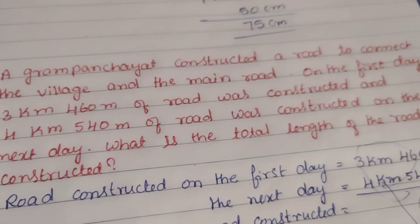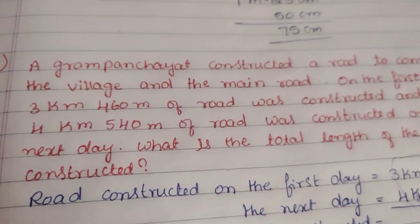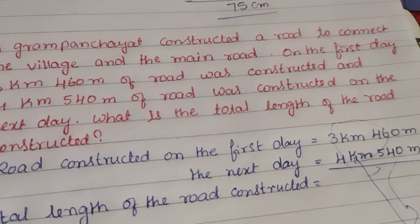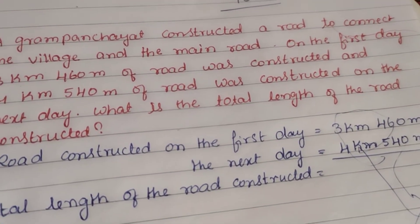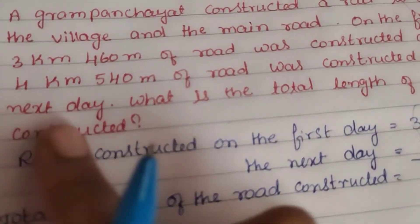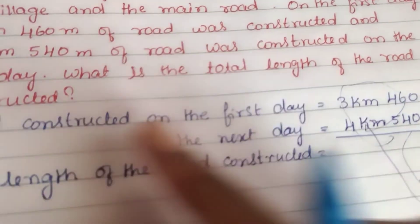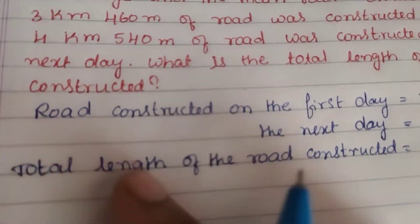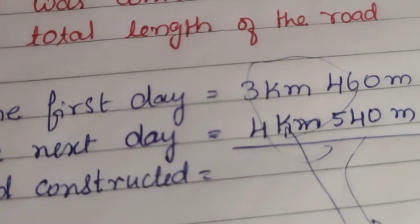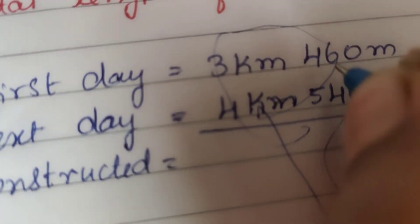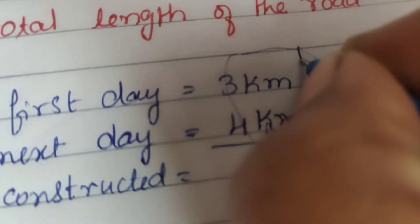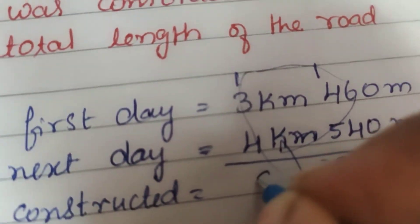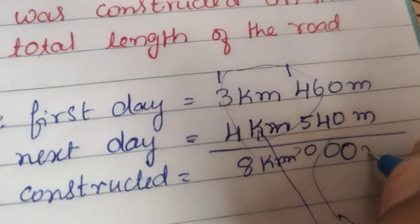Eighth question: A gram panchayat constructed a road to connect the village and the main road. On the first day, 3 kilometres 460 metres of road was constructed, and 4 kilometres 540 metres was constructed on the next day. What is the total length? Road on first day: 3 km 460 m. Road on next day: 4 km 540 m. Adding: 0 plus 0 is 0; 6 plus 4 is 10 — write 0, carry 1; 1 plus 4 is 5, 5 plus 5 is 10 — write 0, carry 1; 1 plus 3 is 4, 4 plus 4 is 8. Total road constructed is 8 kilometres.